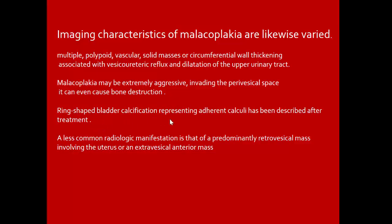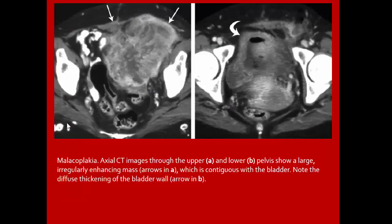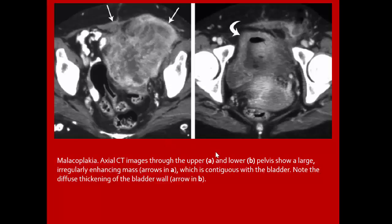Presenting symptoms of malacoplakia include gross hematuria, signs of UTI such as hesitancy, dysuria, frequency, and variable proteinuria. Imaging characteristics include multiple bulboid vascular solid masses or circumferential wall thickening associated with vesicoureteric reflux and upper tract dilatation. Malacoplakia may be extremely aggressive, invading the perivesical space and causing bone destruction. Ring-shaped bladder calcification and predominantly retrovesical or extravesical anterior mass may be seen.